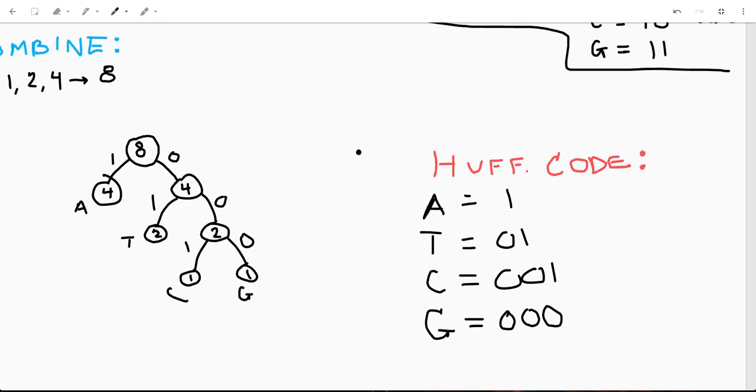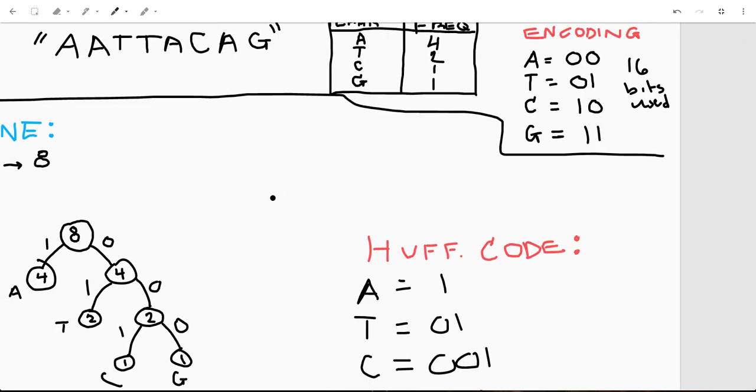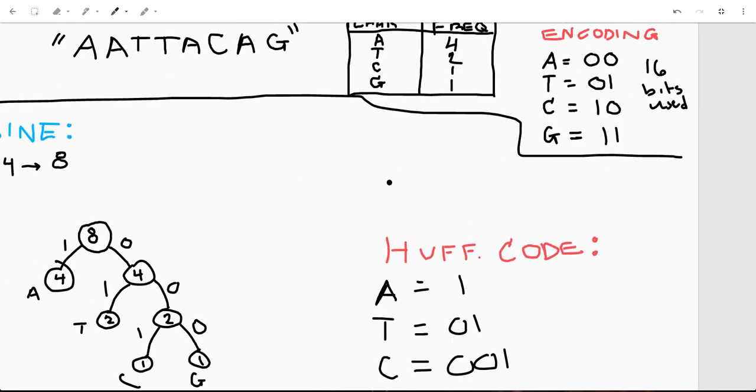And now we go back to the reason that we did this was to see if we could actually save space. So let's go through this and double check to see that we did, in fact, save a little bit of space. So A is now one bit. So one, two, three, four.